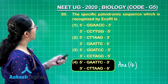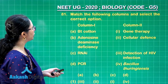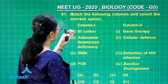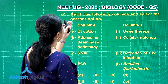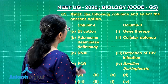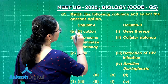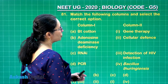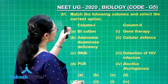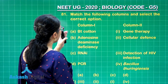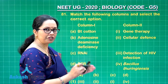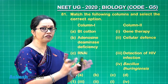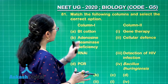Question AT1 is a match-the-column from biotechnology. BT cotton is a genetically modified crop where the gene from Bacillus thuringiensis has been transferred — so A matches with 4. Adenosine deaminase deficiency is a condition in SCID (severe combined immune deficiency), treated by gene therapy where the correct gene copy was transferred into lymphocytes.